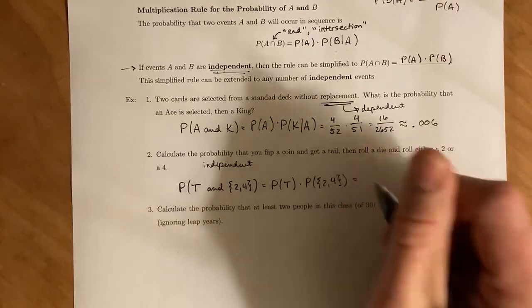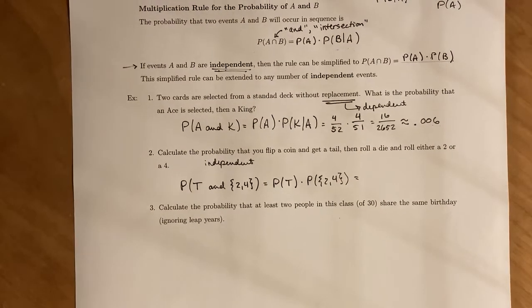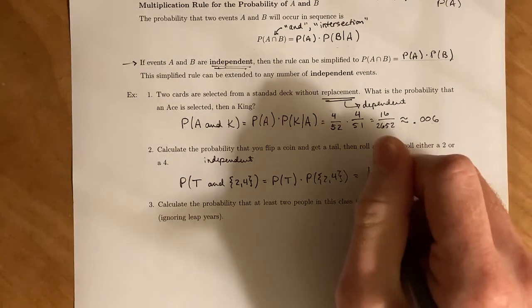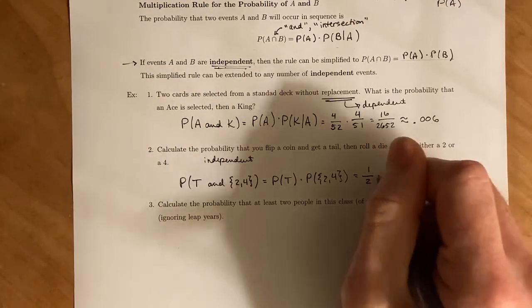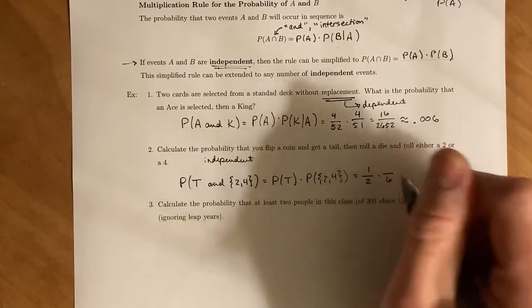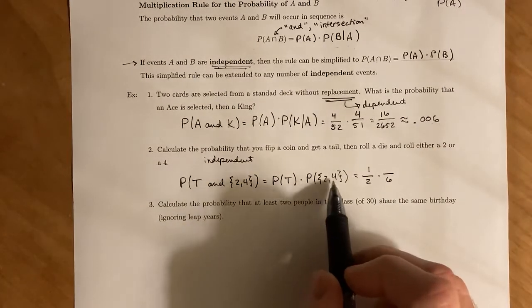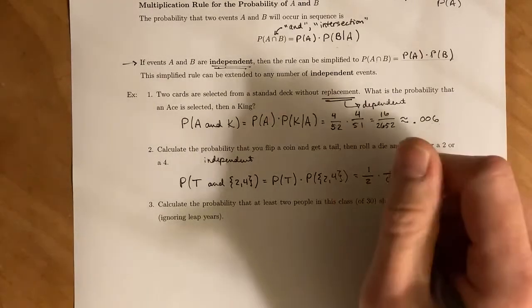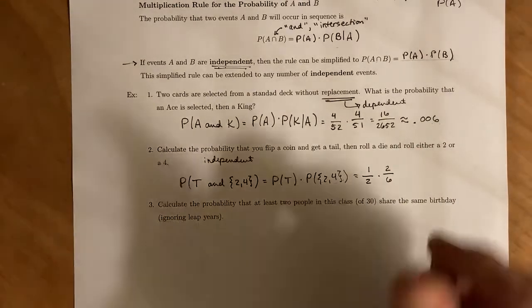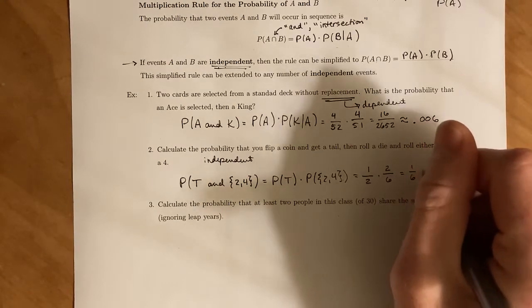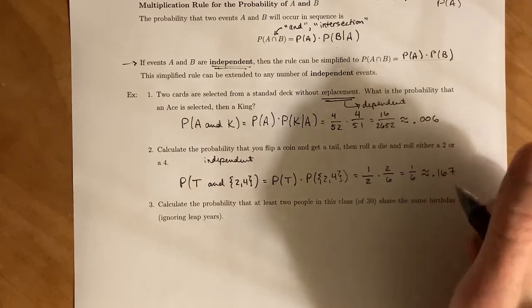And then you just take care of calculating those two probabilities separately. Since there's only two sides to a coin, the tails is one out of two. And since you have six possible sides to a die, the probability of this event happening, there's only two things inside of the event, which simplifying this gives you one out of six, which is roughly 0.167.